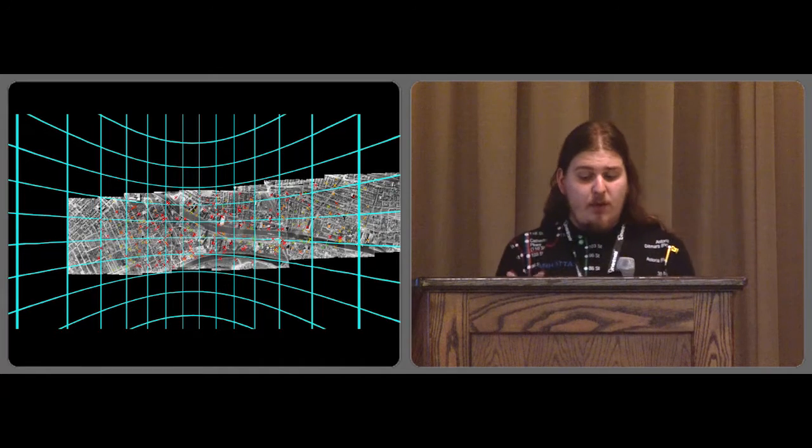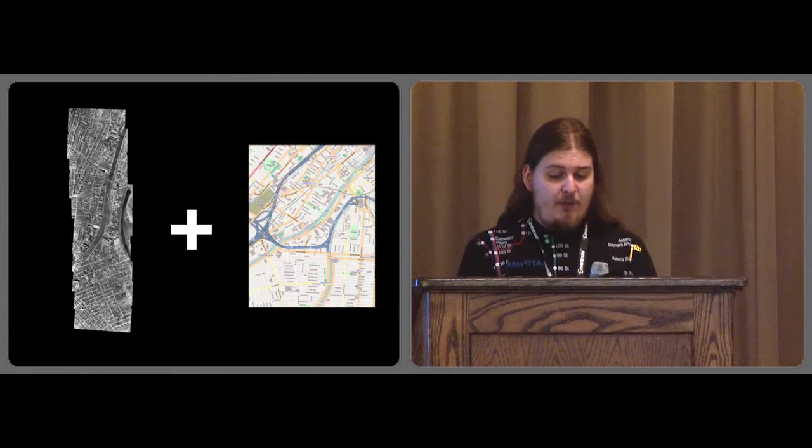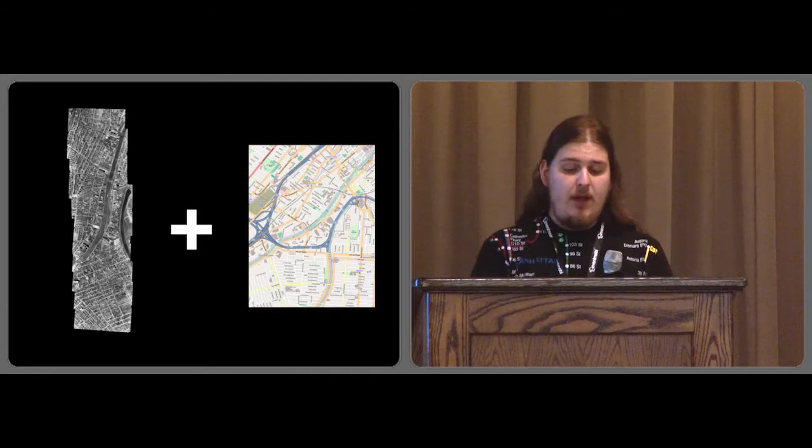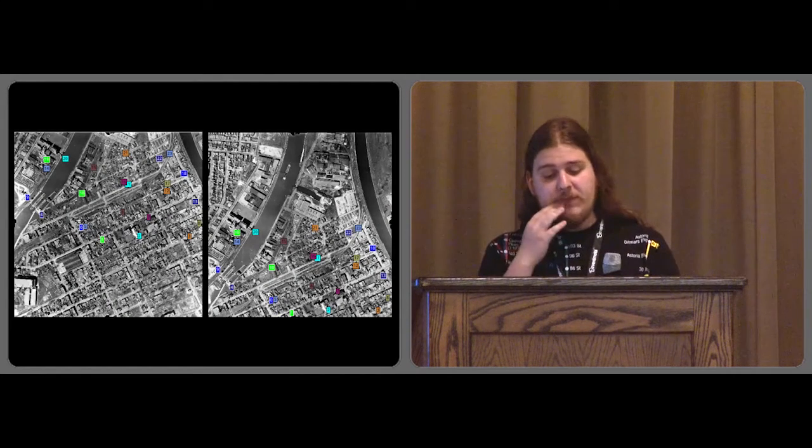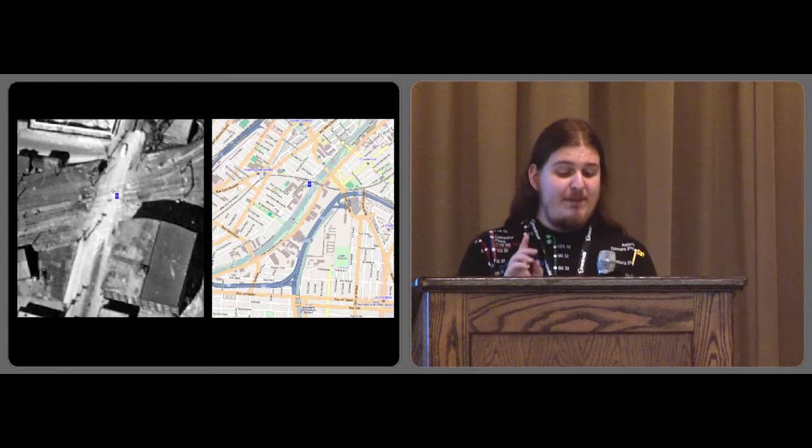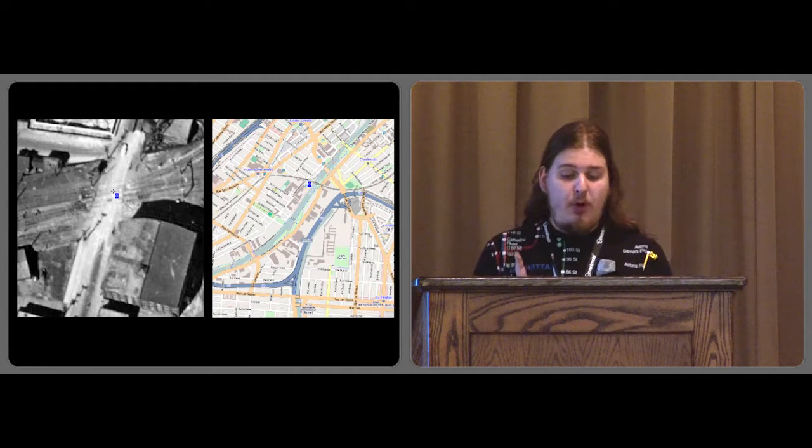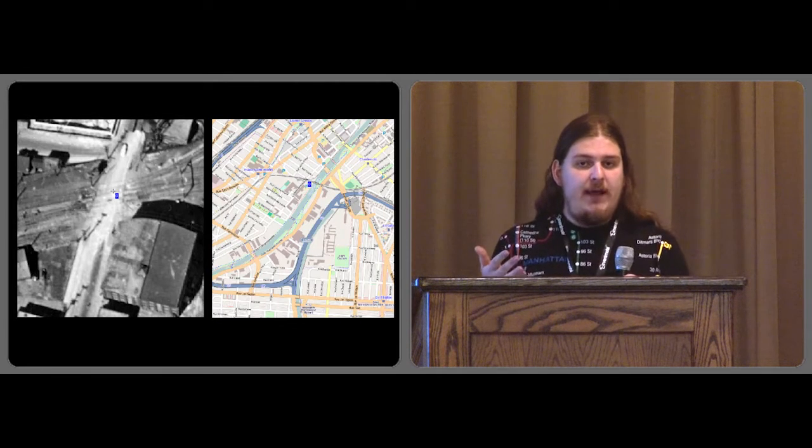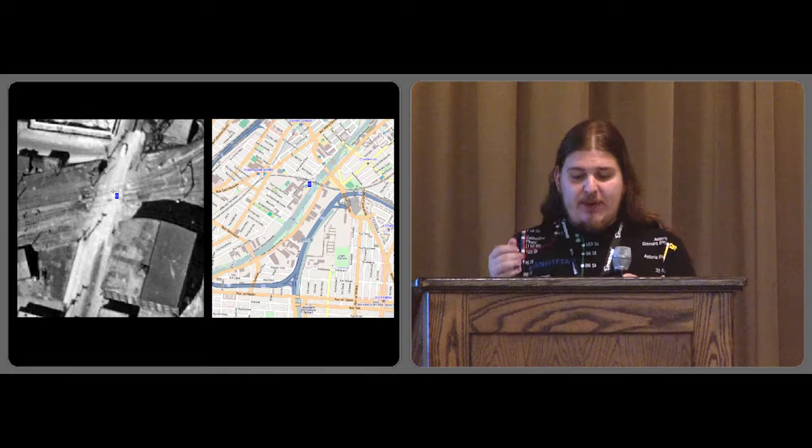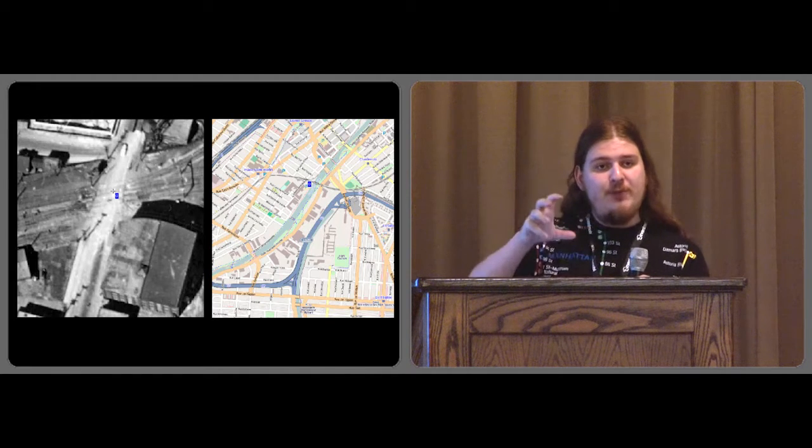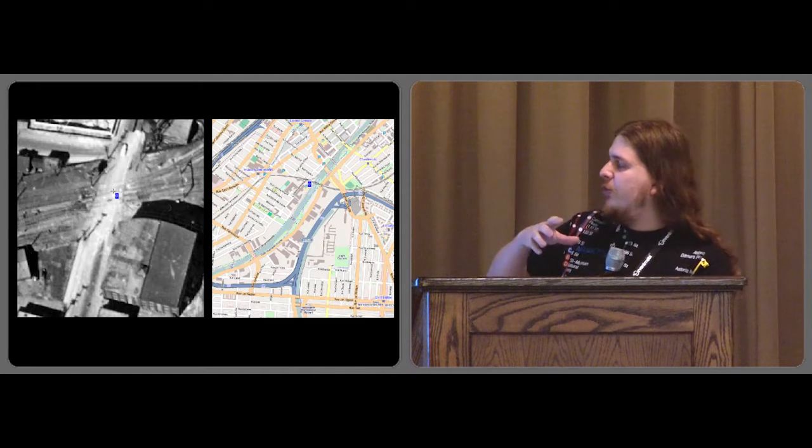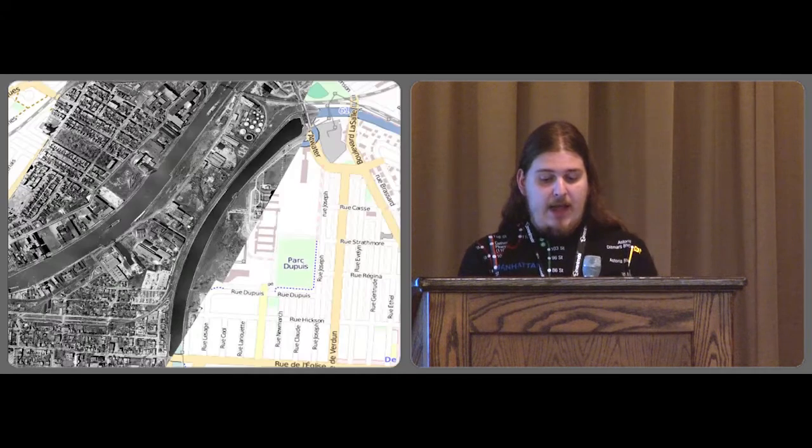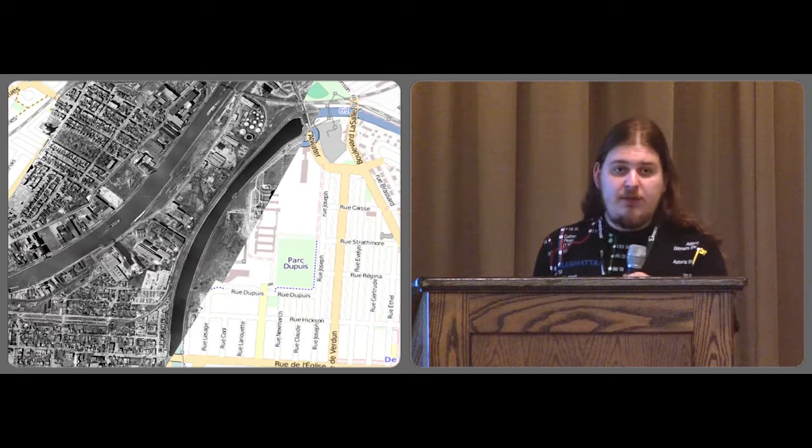So I thought, isn't there a way maybe to add some constraints globally? And the way I thought is, what if I add reference points between the old images and the map? So I use the same software. Let's have some reference points between adjacent images. But manually, I can add a point between an old photo and a map that I just supplied. And this way, I can force the aerial photos to be mapped into the coordinate reference systems of the map, like into the space of the map. And this is exactly what happened, and it worked pretty well.